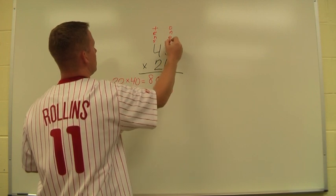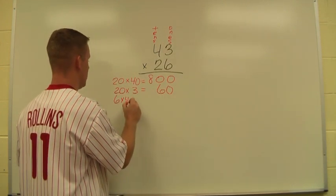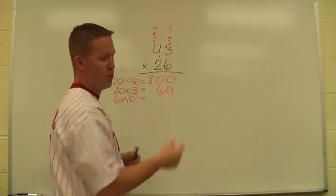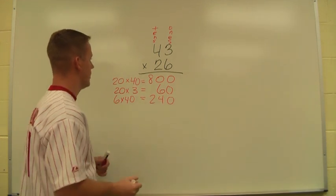Sometimes it's helpful to label the place values. I have 6 times 40, and it doesn't really matter what order we do these in. If these are different, that's fine. 6 times 4 being 24. Add a 0, 240.